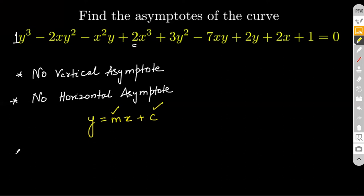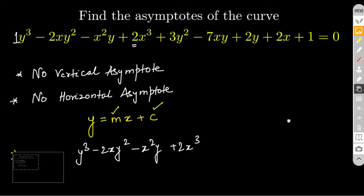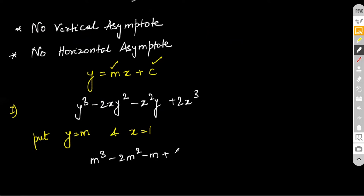The first step is we collect all the highest degree terms together. The highest degree terms are y³ − 2xy² − x²y + 2x³. In this expression, we put y as m and x as 1. When we do that, we end up getting m³ − 2m² − m + 2. We will call this as a polynomial in m of degree 3, written as φ₃(m).